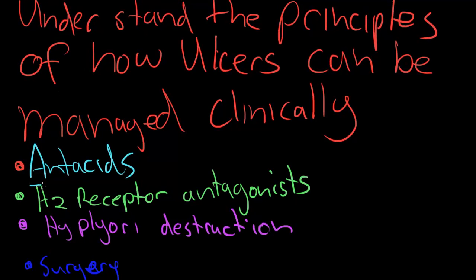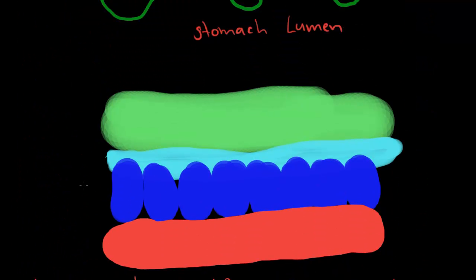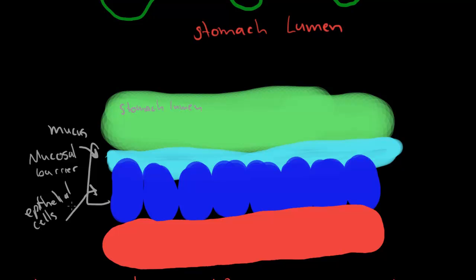First I'll talk about antacids. I want to try and do this quickly so I've pre-made a bit of stuff. Here we have the stomach lumen, the mucosal barrier consisting of the mucus and the epithelial cells - in this case specifically the mucus secreting cells. And this red stuff is blood. We'll just pretend the interstitial's in there and there's nerves all free here.